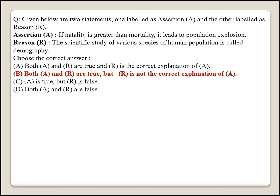Next question: given below are two statements, one labeled as assertion and other as reason. Assertion: if natality is greater than mortality, it leads to population explosion. Reason: the scientific study of various species of human population is called demography. Both A and R are true but R is not the correct explanation of A. Option B is the right answer.